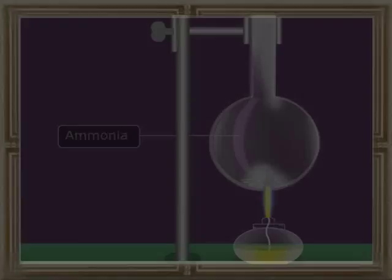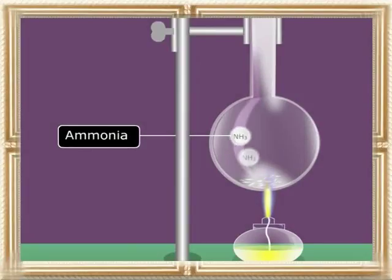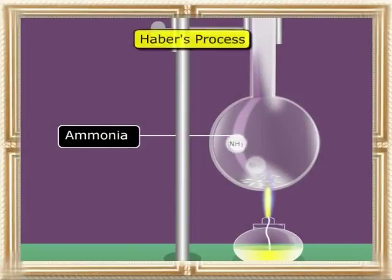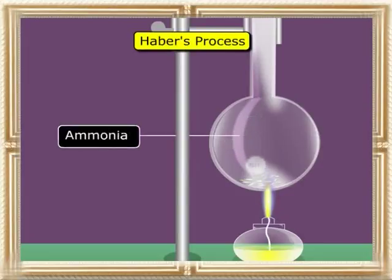Since we have discussed the physical as well as chemical properties of nitrogen, we are ready to take a look at the various uses of nitrogen. Nitrogen is used in the manufacturing of ammonia by Haber's process.